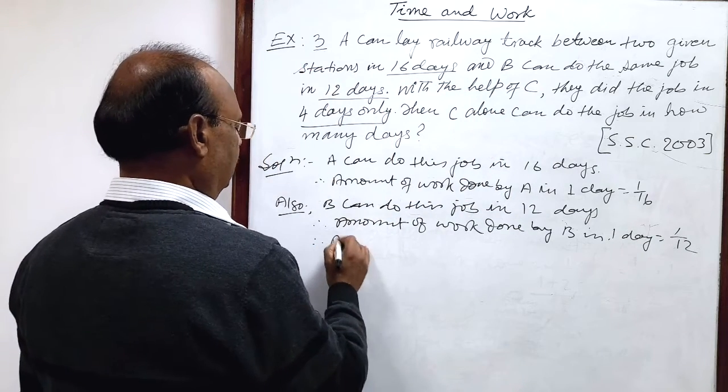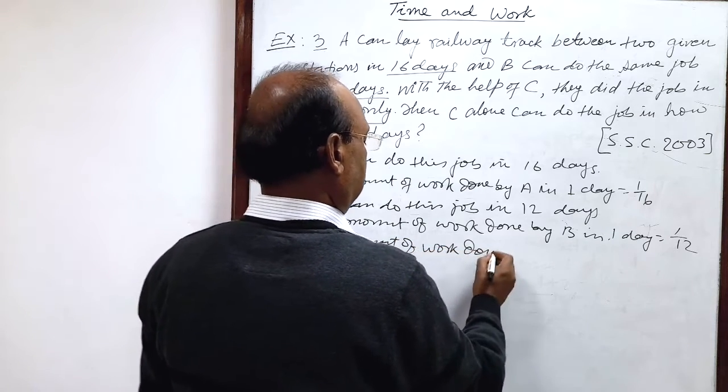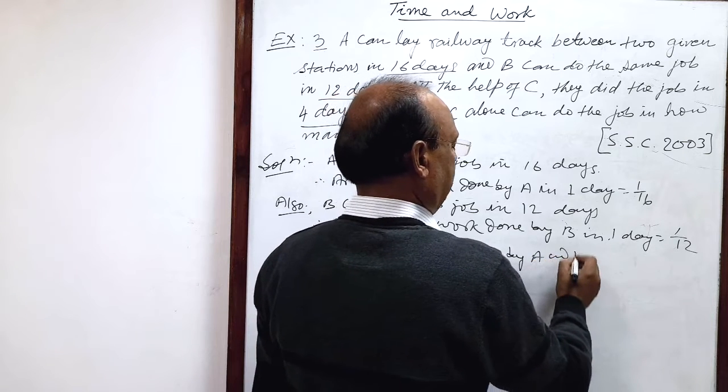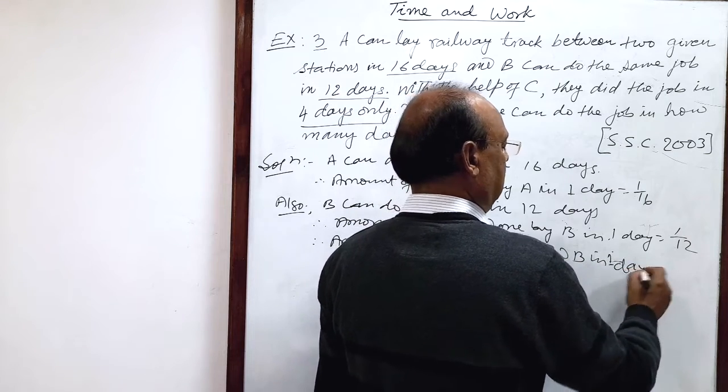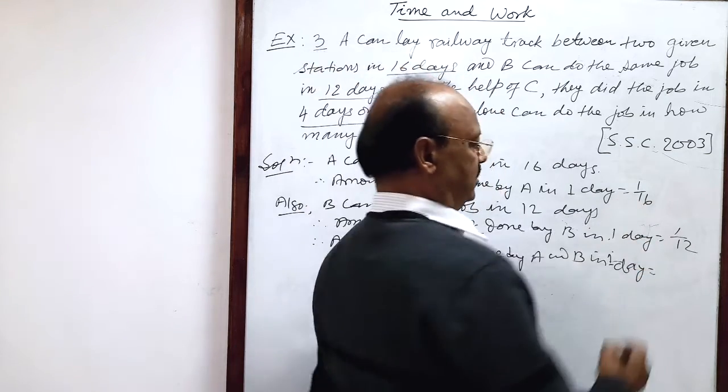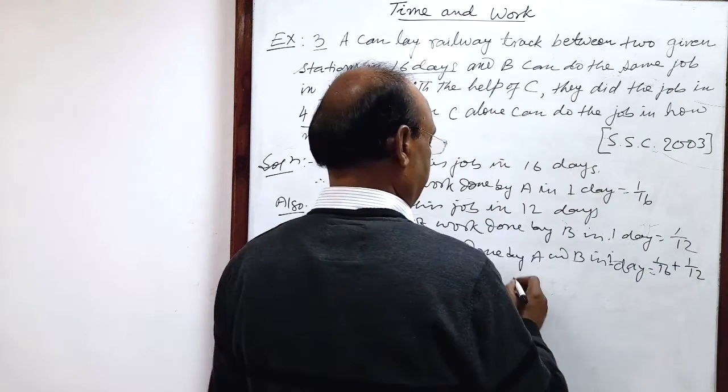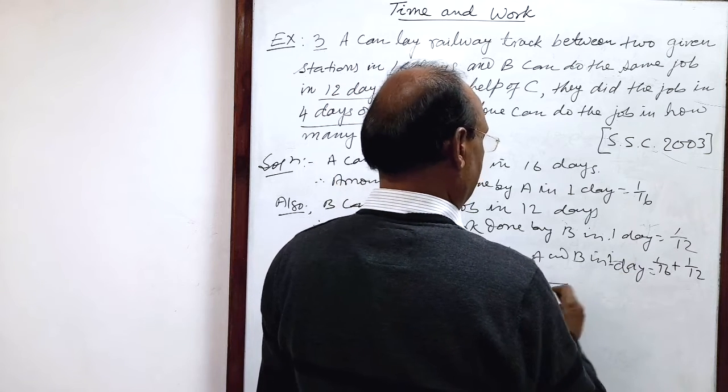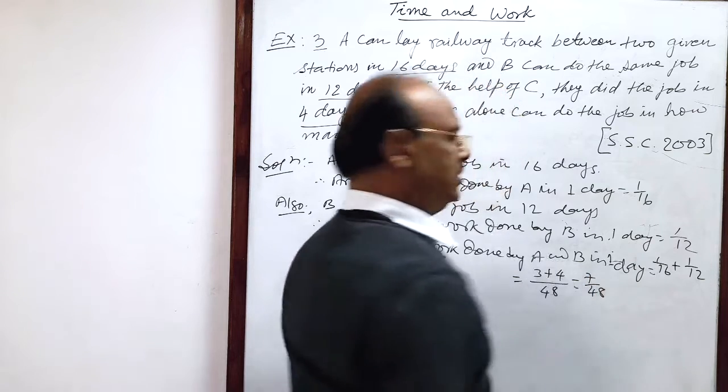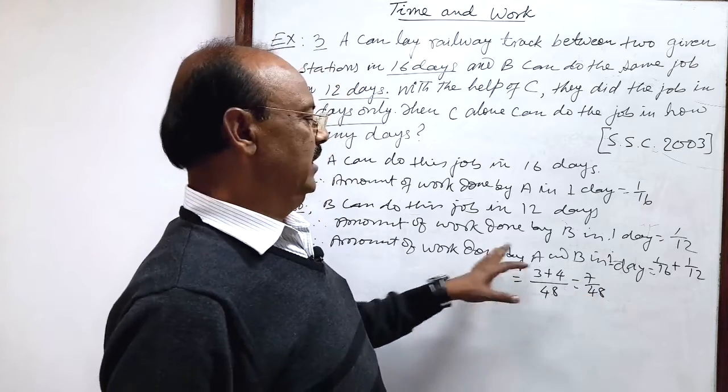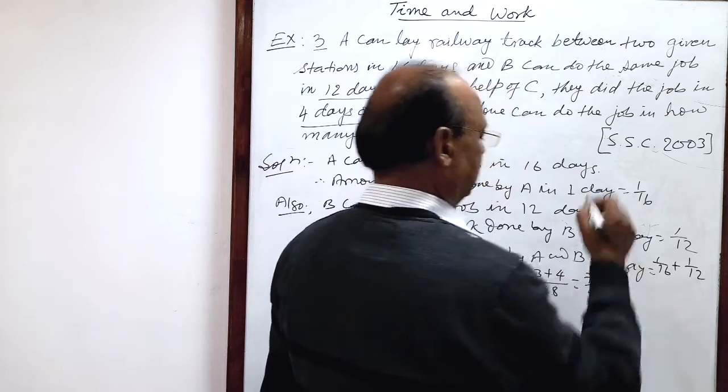And therefore, amount of work done by both A and B in one day, we have to add these two numbers figures 1 by 16 plus 1 by 12. So let us take LCM here. LCM will be 48 and 3 plus 4 that is 7 by 48 work has been done when A and B work together. This is the amount of work in one day.